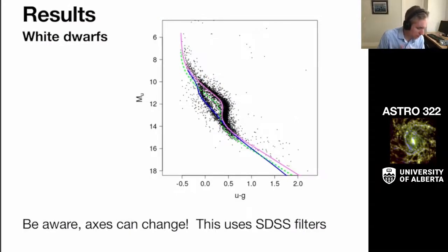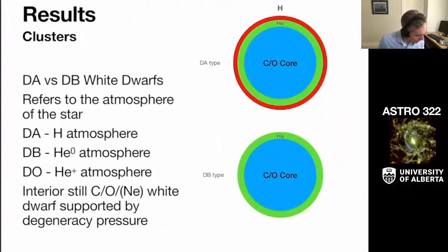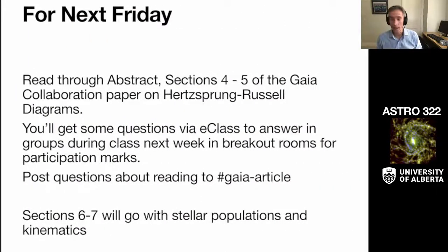The final thing that you want to know and be aware of when you're looking at the figures is the axes can change. They're showing you like 20 Hertzsprung-Russell diagrams as you go through this article. What's happening? Well, these change to different filters occasionally. So I encourage you to go back to chapter one and take a look at what those filter sets are and what they correspond to, so you can interpret these diagrams. So what is a U versus a G filter in Sloan filter set? And there's the figure I wanted. So for next Friday, we'll be doing a similar exercise as today, but we'll do sections four and five of the Gaia collaboration paper on the Hertzsprung-Russell diagrams, and we'll answer the e-class questions. So again, post questions about the reading to the Gaia article channel on Discord, and then once we cover stellar pops in detail, we'll go into kinematics.